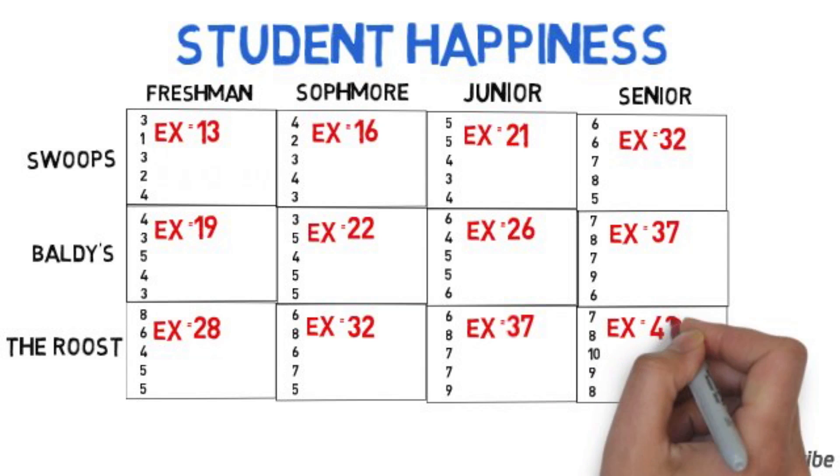We're now going to start adding the numbers down each column. The columns are factor A. Factor A is the student standing, such as freshman, sophomore, junior, and senior.